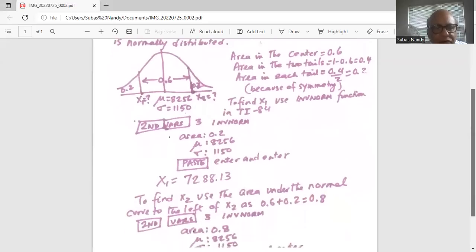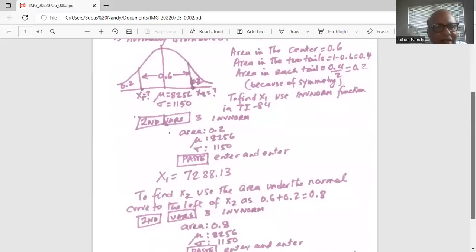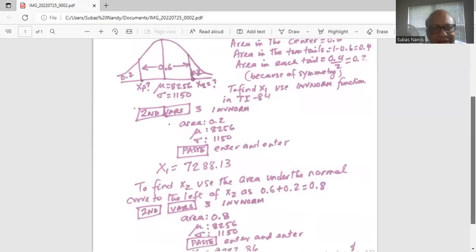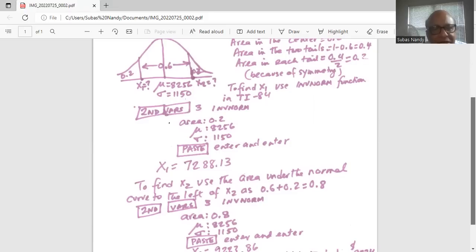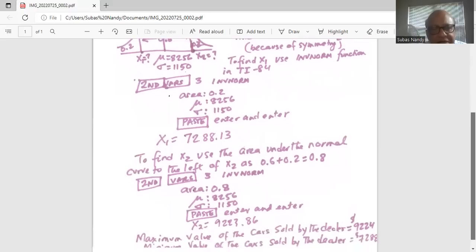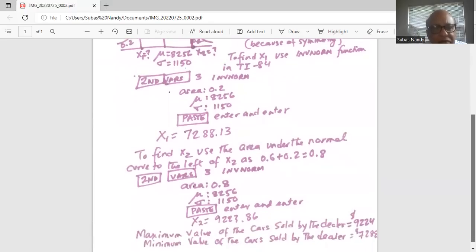Now we need to find X2. We know the area to the left of X2 is 0.6 in the center plus 0.2 in the left tail, which is 0.8. So again, we press the second key, then the vars key and select option three. InvNorm, area to the left is 0.8, mean is 8,256, sigma is 1,150. We go down to paste enter and enter, X2 works out to 9,223.86.